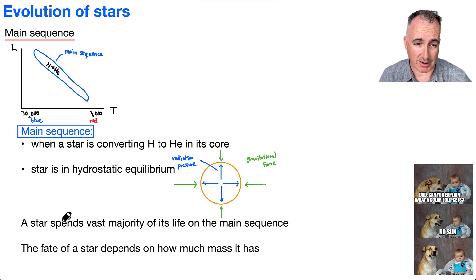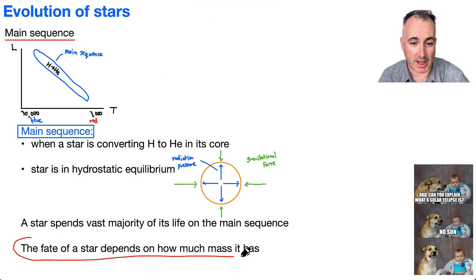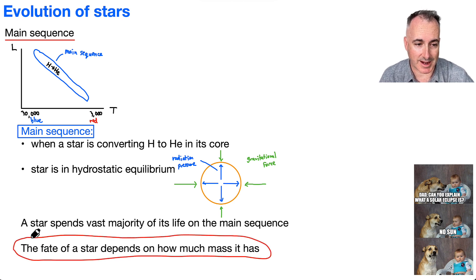Now, stars spend almost their entire lifetime on the main sequence. And what I think is really important is this one, that the fate of a star depends on how much mass it has. So mass kind of tells you everything. If a star doesn't have much mass, it's a very low mass star over here, then we know kind of what it's going to be like. If it's a higher mass star, we also know what its fate is going to be. So it's all about the mass.